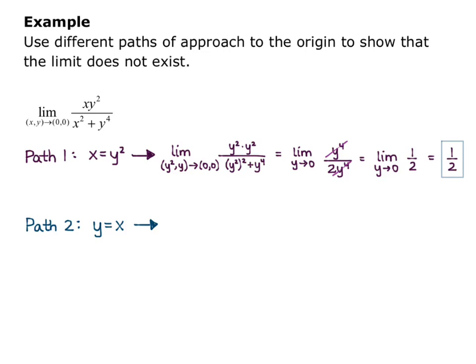When I plug that in, I get the limit as (x,x) approaches (0,0). And everywhere I see a y, I'm going to replace with an x. So I get x times x² on the top, over x² + x⁴ in the denominator.